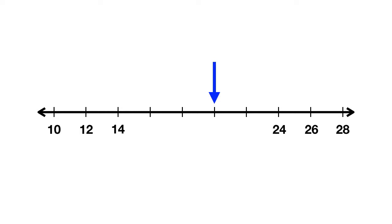What number is the arrow pointing at? On this number line, every time you moved one dash to the right, you added 2. To get from 10 to 12, you add 2, 12 to 14, add 2, 24 to 26, add 2.